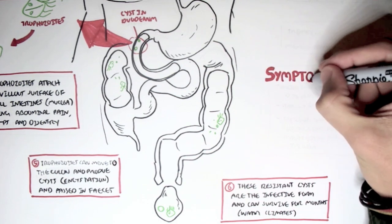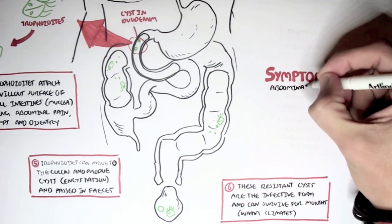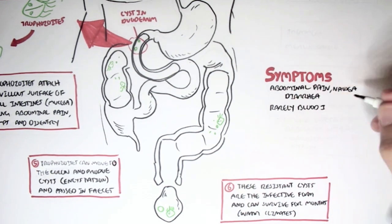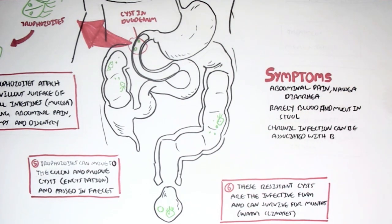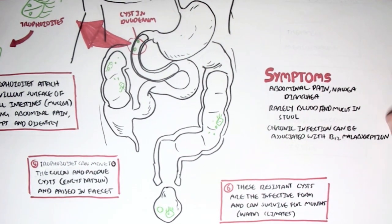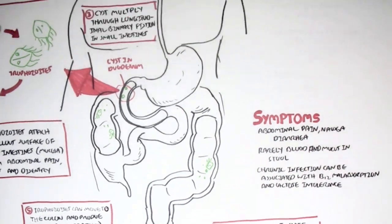Symptoms of Giardiasis include abdominal pain, nausea, and particularly diarrhea. There is rarely blood and mucus in the feces. Chronic infections can be associated with vitamin B12 malabsorption and lactose intolerance, which can be an issue.